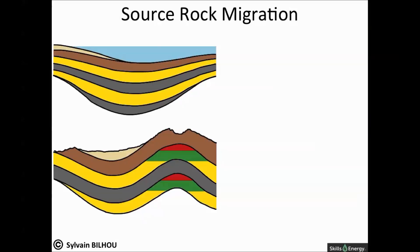Another crucial step is the expulsion of hydrocarbons from the source rock. Due to their depositional setting, source rocks are generally fine-grained sediments and have low permeability. As a consequence, during burial, the capillary pressure increases. The increase of internal pressure is additionally amplified by the hydrocarbon generation itself.